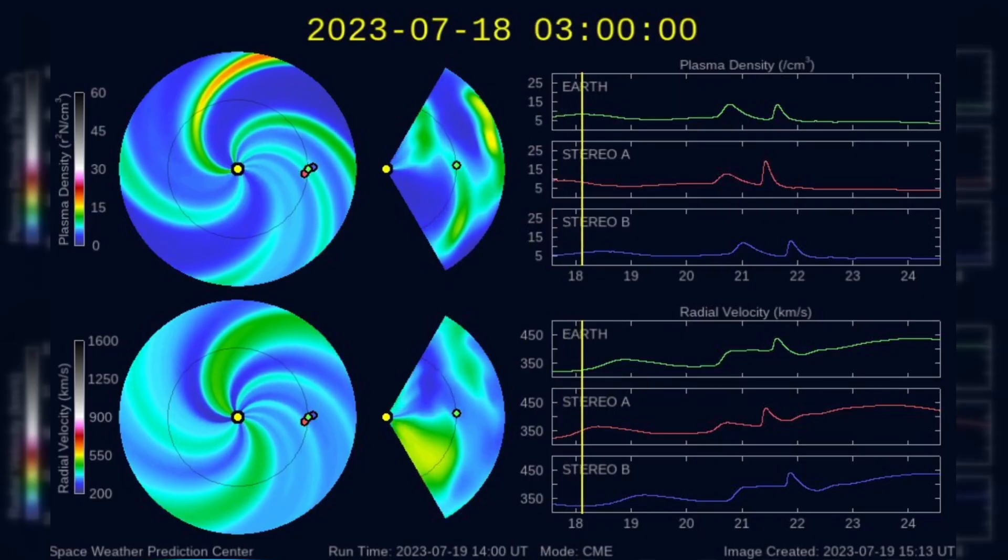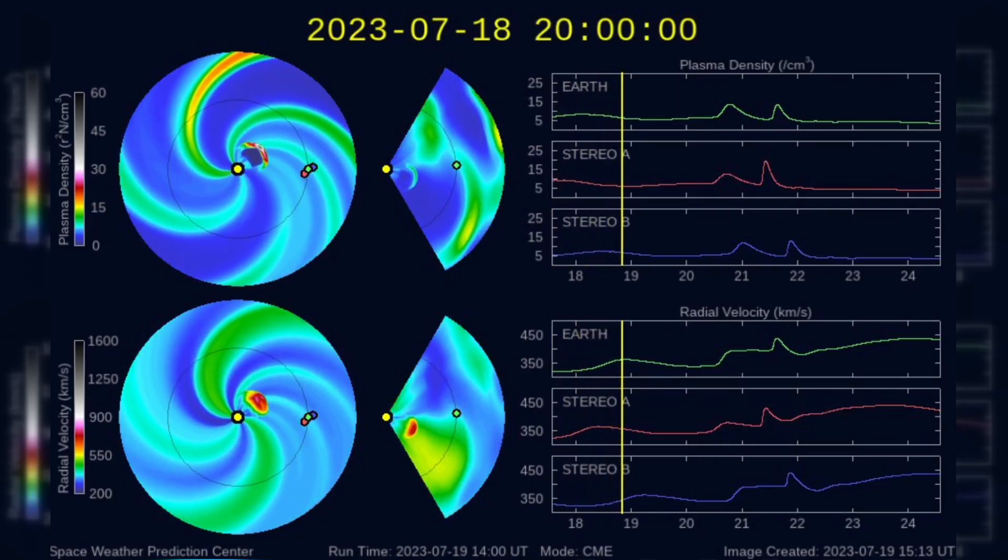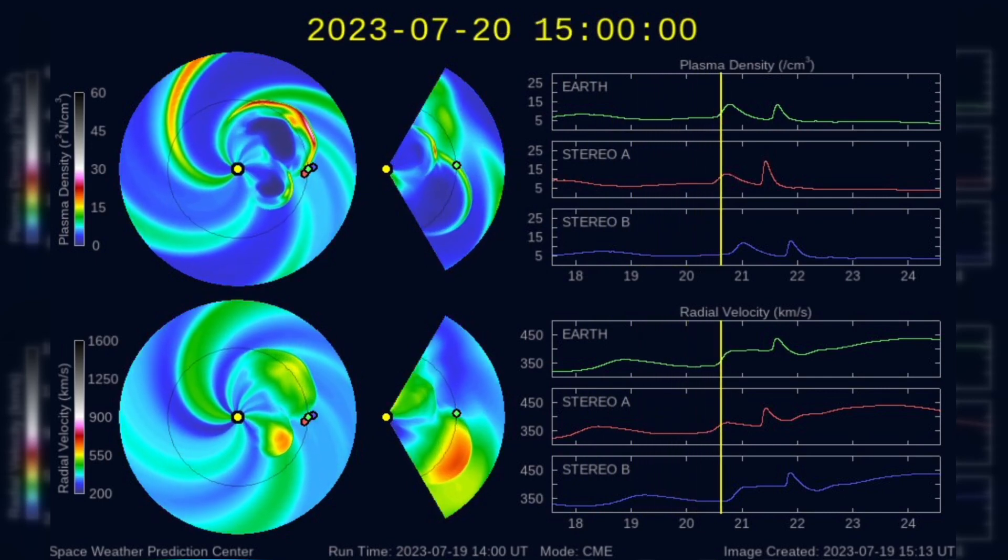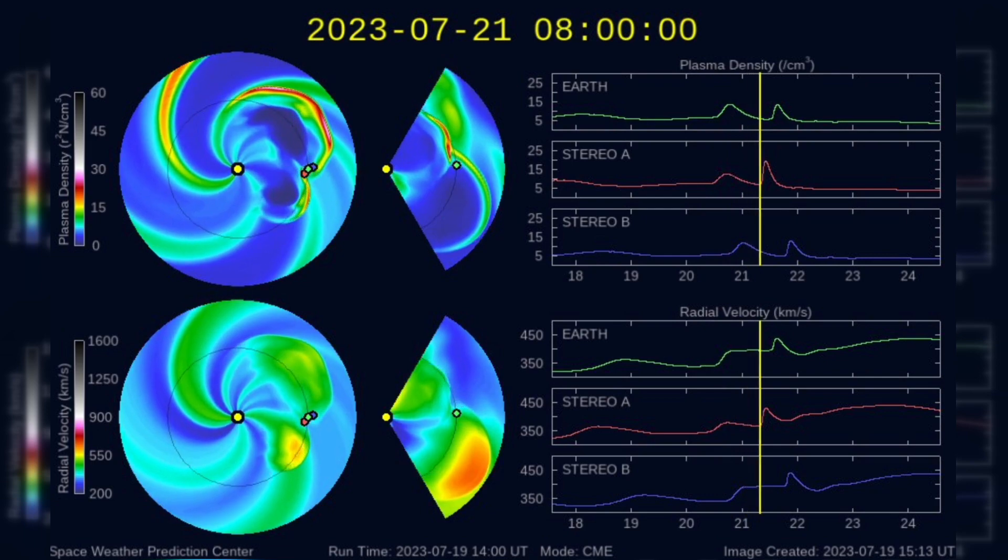On July 20 and 21, as predicted, Earth experienced two coronal mass ejections. However, both impacts were weak and did not result in even a minor geomagnetic storm.